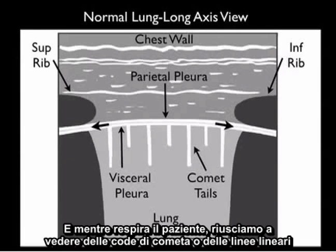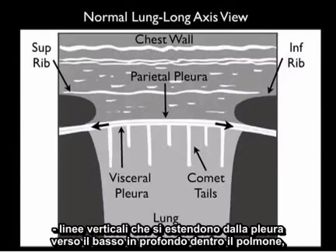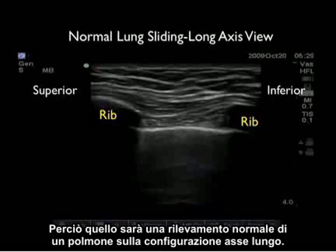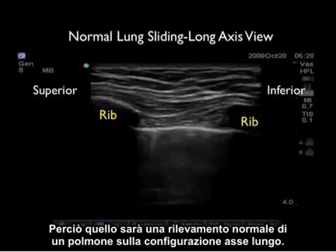As the patient breathes, we can see white comet tails — vertical lines — coming off the pleura down deep into the lung. That will be the normal finding of a lung on long axis configuration.